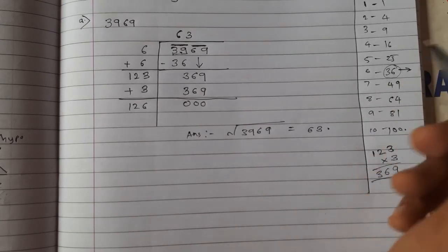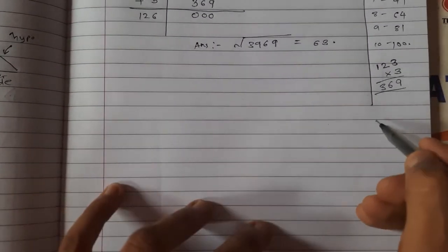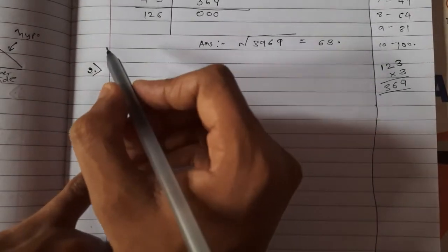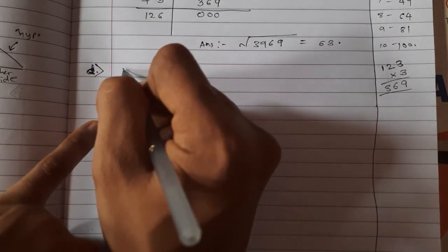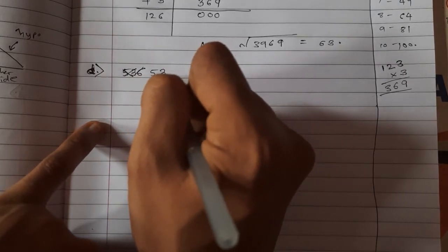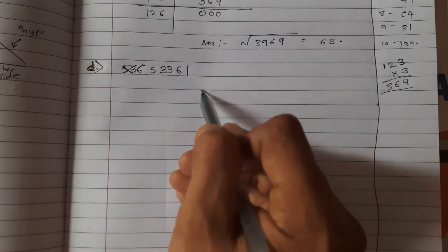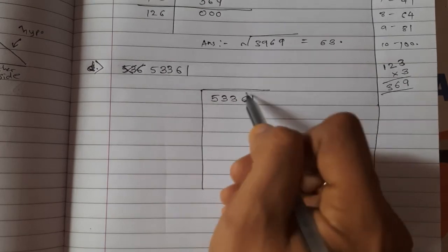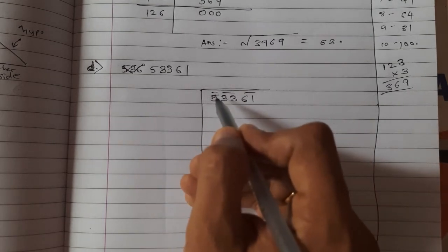Like this you have to find square root using division method. One more sum — let us extend the rough column. I will take a bigger number: sum (d) — 53361. Draw a line and make groups. So the groups are: 5, 33, 61.